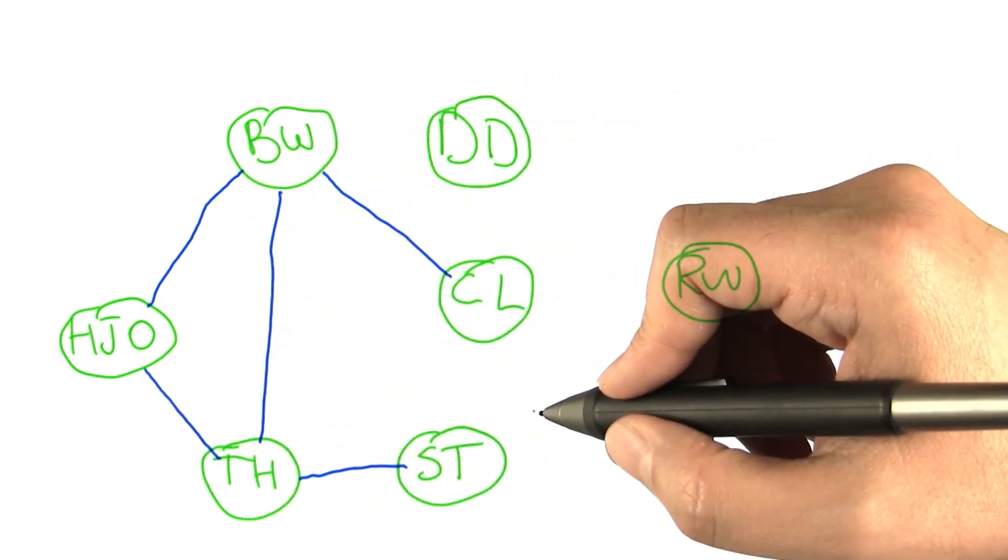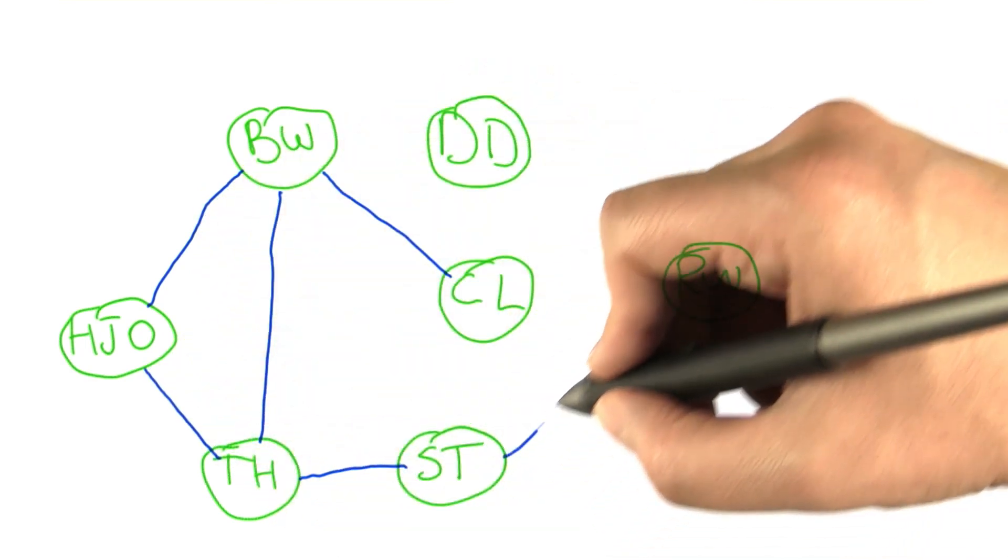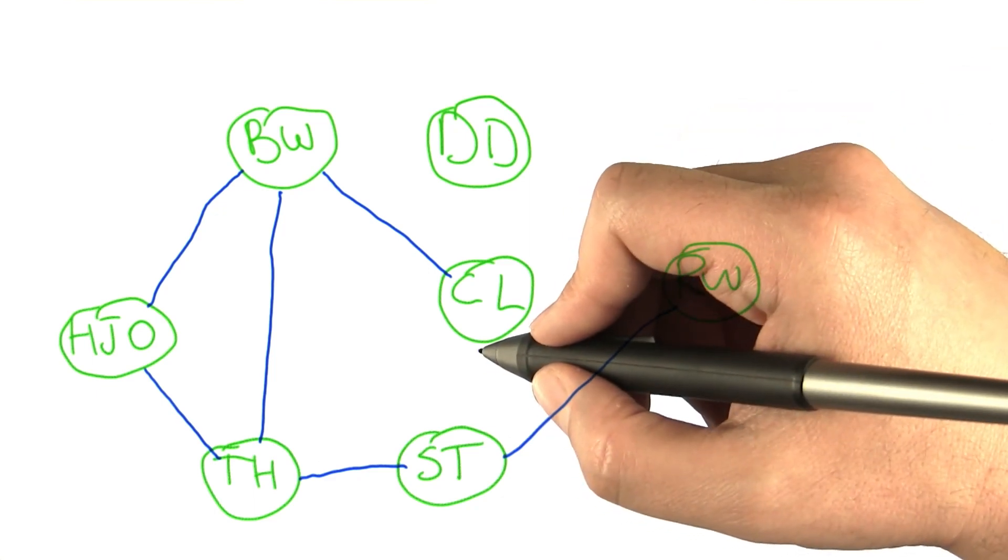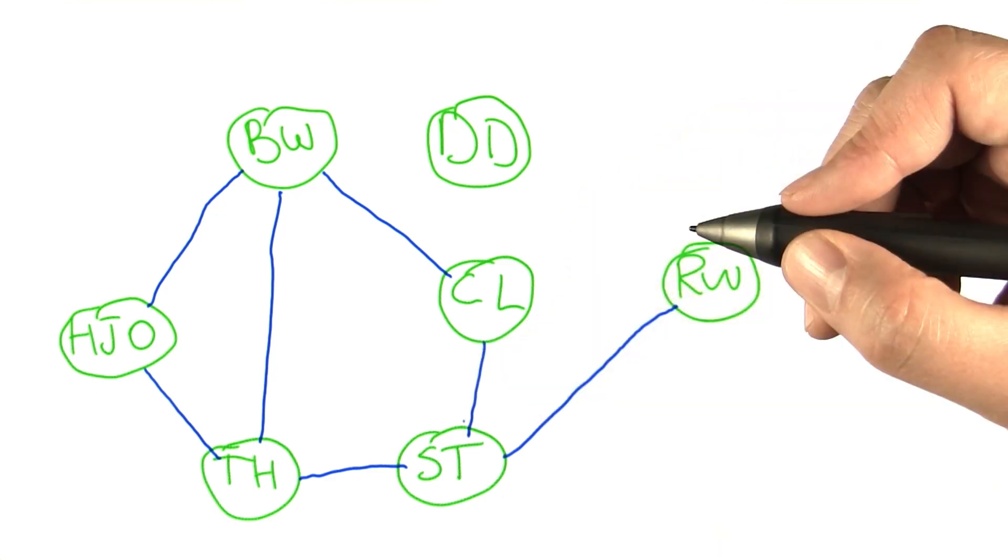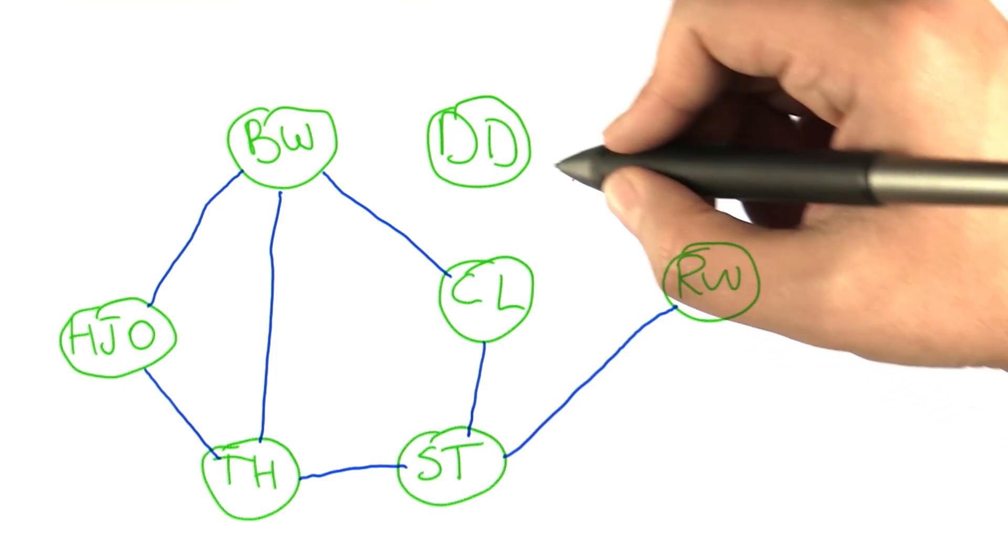Robin Williams and Stanley Tucci were in a movie called Deconstructing Harry. Cloris Leachman and Stanley Tucci were in a movie called Gambit. Danny DeVito and Robin Williams were in Death to Smoochy.